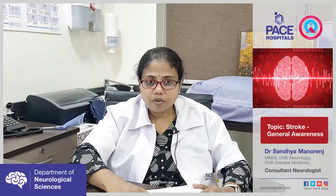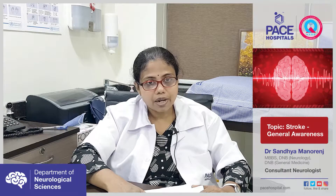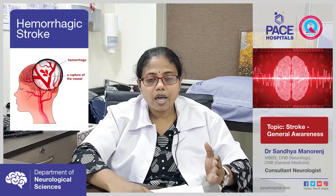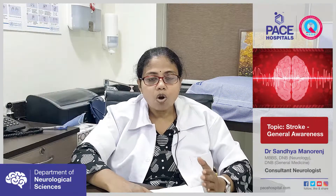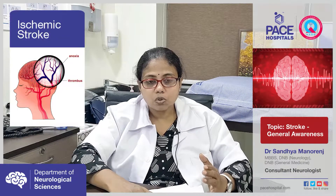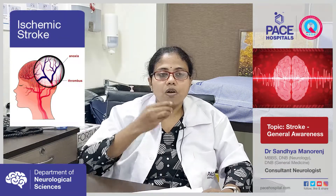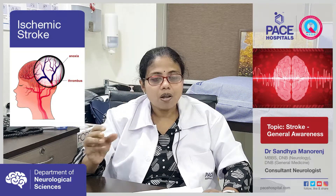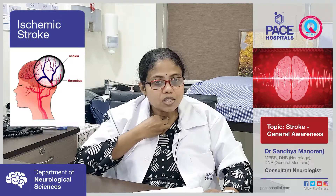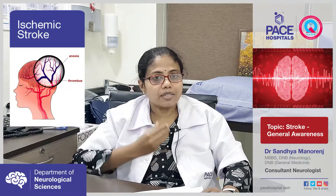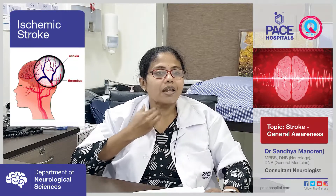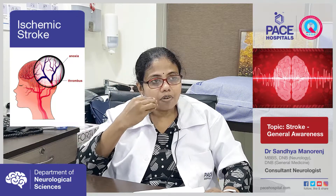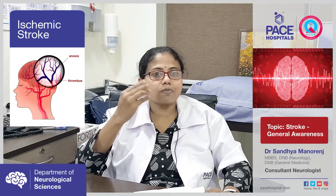There are two types of stroke: ischemic stroke and hemorrhagic stroke. Ischemic stroke accounts for 80 percent of strokes and hemorrhagic stroke accounts for around 15 to 20 percent. Ischemic stroke occurs when a clot forms in a large blood vessel, or in the neck vessels supplying the brain, or when a clot is dislodged from the heart to the neck vessels and ultimately to the brain, causing decreased blood supply.